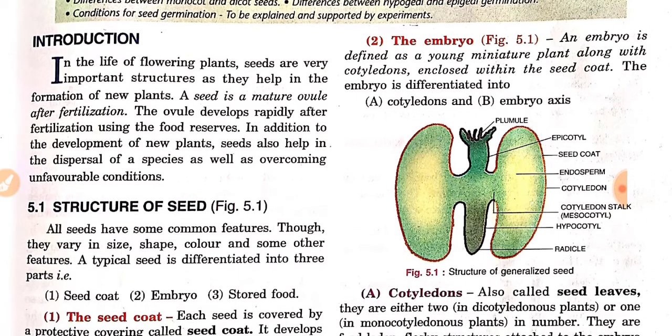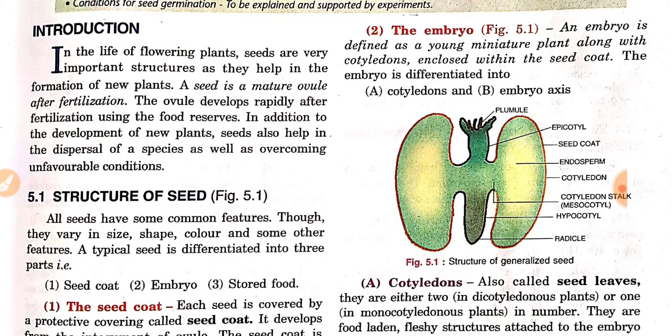In the life of flowering plants, seeds are very important structures as they help in the formation of new plants. A seed is a mature ovule after fertilization. The ovule develops rapidly after fertilization using the food reserves. In addition to the development of new plants, seeds also help in the dispersal of species as well as overcoming unfavorable conditions.